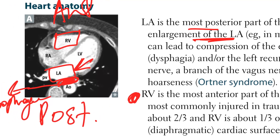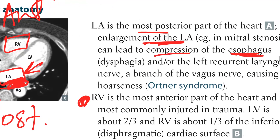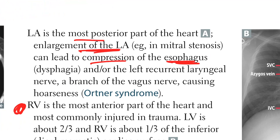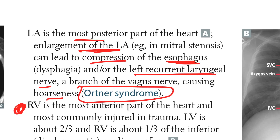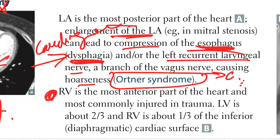So the esophagus is behind the left atrium. If you increase the size of the left atrium, you're going to compress the esophagus. On top of that, you could affect your left recurrent laryngeal nerve, which can give you hoarseness — known as Ortner syndrome. With Ortner syndrome, the patient can have chronic cough, hoarseness, and dysphagia when the esophagus is obstructed — called cardiogenic dysphagia.